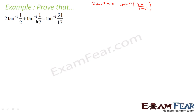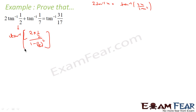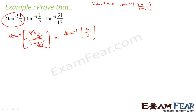So 2 tan inverse 1 by 2 becomes tan inverse of 2 into 1 by 2, divided by 1 minus (1 by 2) squared. The numerator is 1, and 1 minus 1 by 4 is 3 by 4. So this becomes tan inverse of 1 divided by 3 by 4, which is 4 by 3. So 2 tan inverse 1 by 2 equals tan inverse 4 by 3.